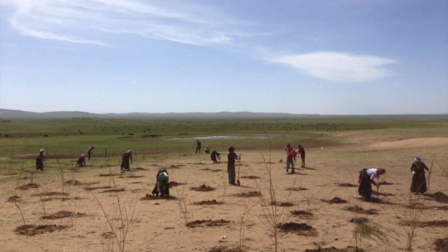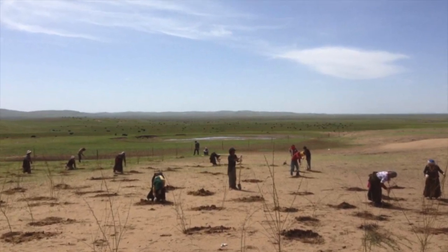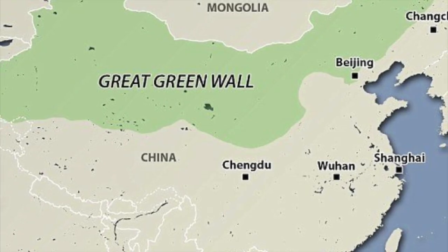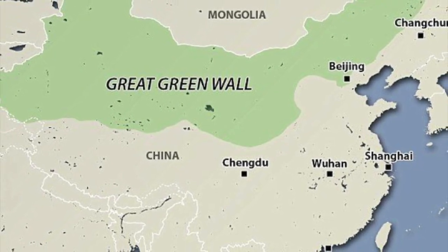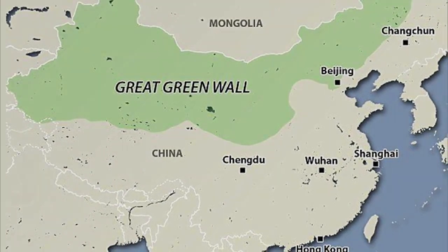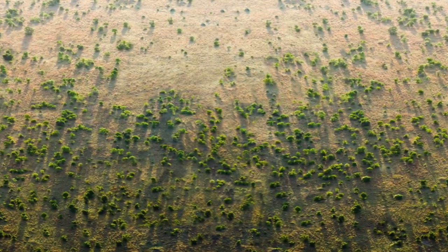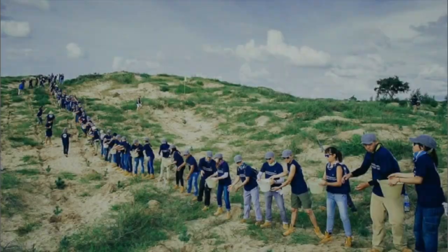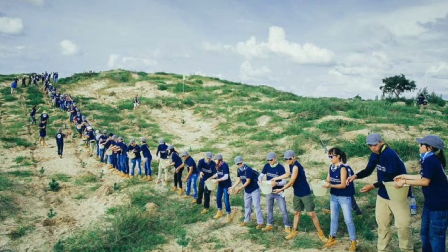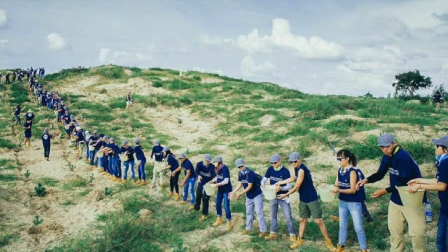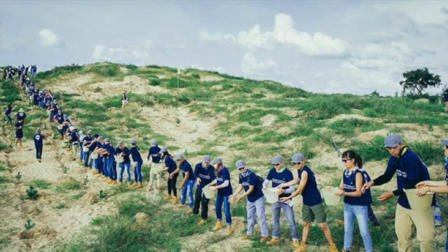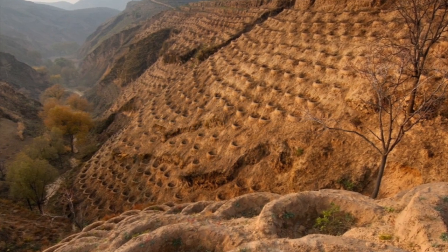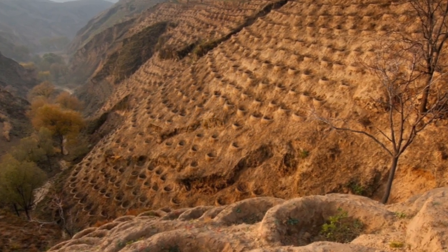In finding solutions, it is important to realize that there is no universal fix. One solution being implemented right now is the Three North Shelter Belt project — in other words, the Great Green Wall. Since the project's beginning in 1978, 66 billion trees have been planted. By the project's projected end in 2050, the belt is intended to be 2,800 miles long. However, there are many problems with this wall, such as the fact that much of the planting is being done with a small variety of non-native species of trees. Therefore, many of these trees are poorly suited for their environment and susceptible to disease.